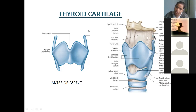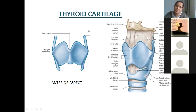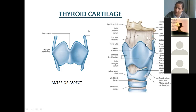Within this lateral thyrohyoid ligament, sometimes some cartilage may get deposited — chondrocytes may function here — leading to the formation of the fourth paired cartilage, that is cartilago triticea.